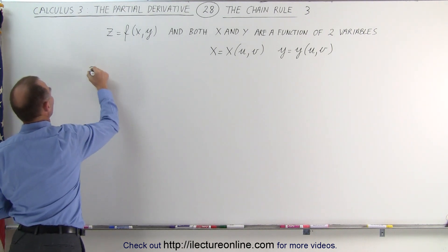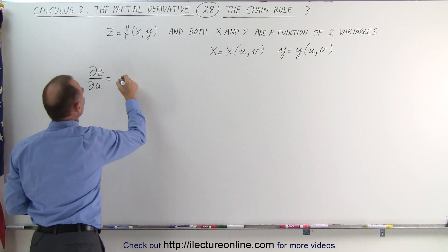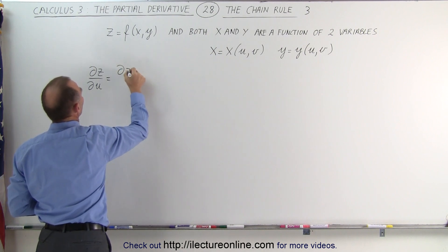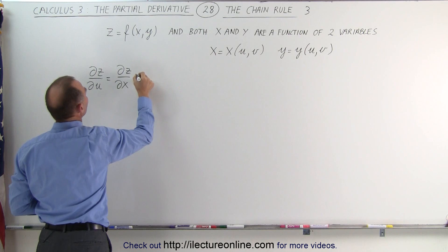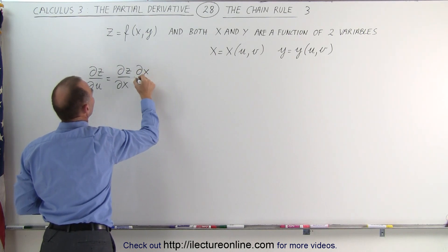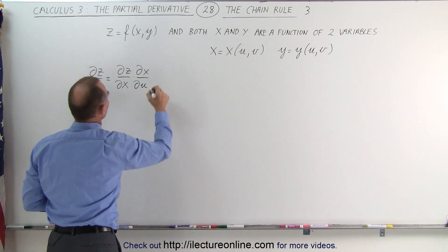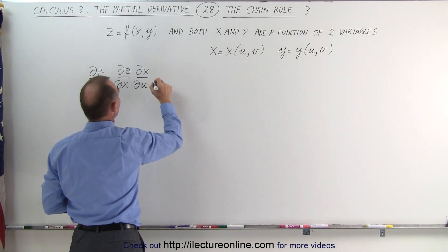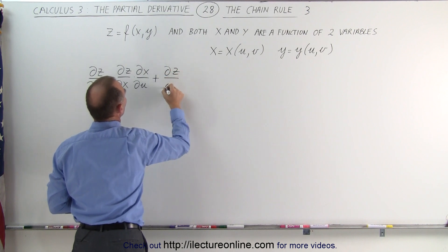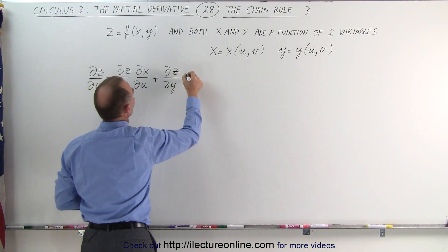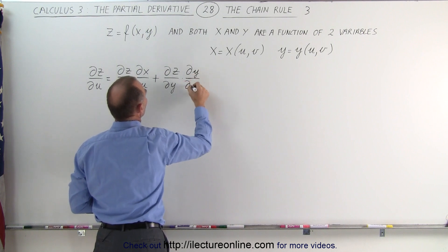The partial derivative of z with respect to u is equal to the partial derivative of z with respect to x times the partial derivative of x with respect to u, plus the partial derivative of z with respect to y times the partial derivative of y with respect to u.